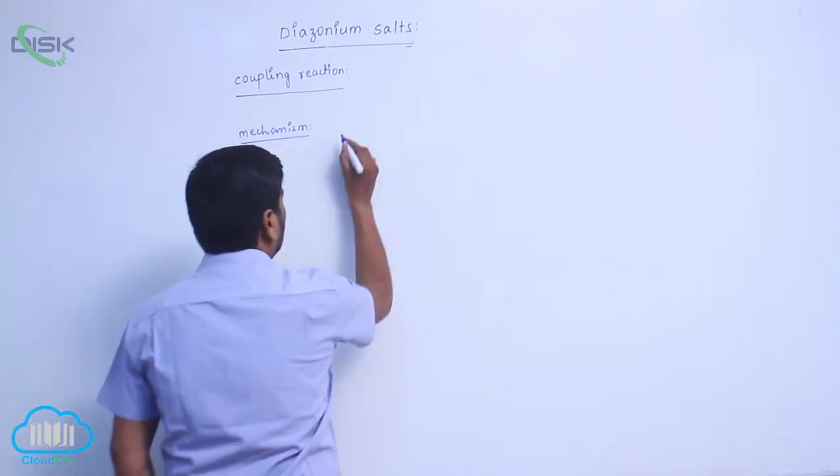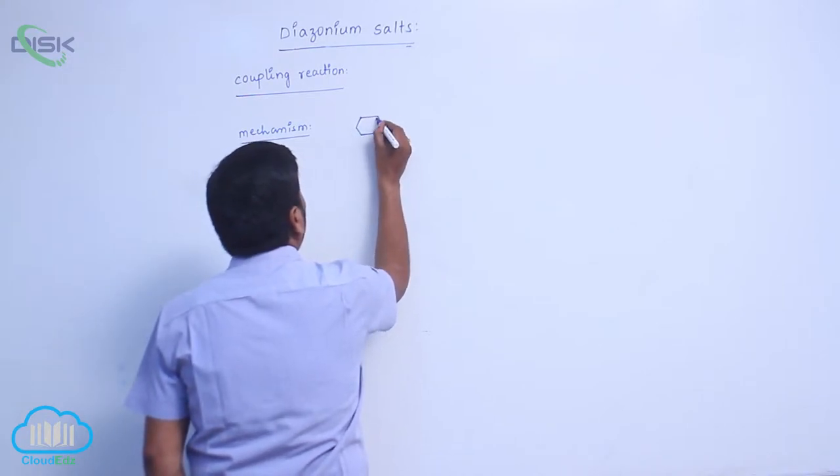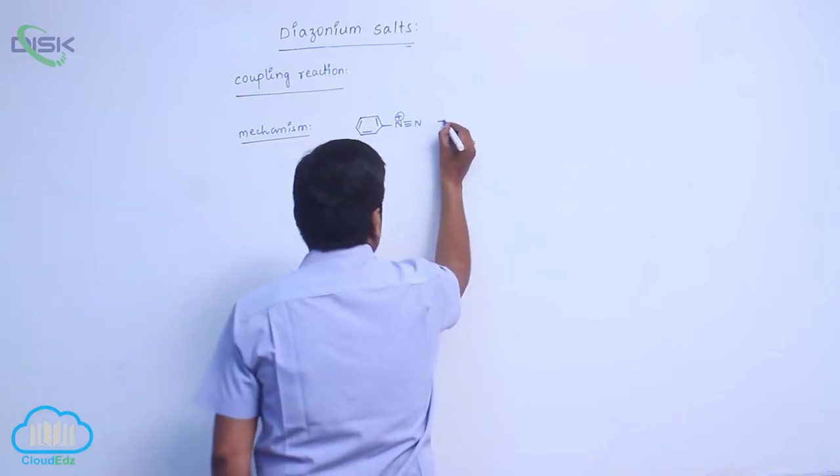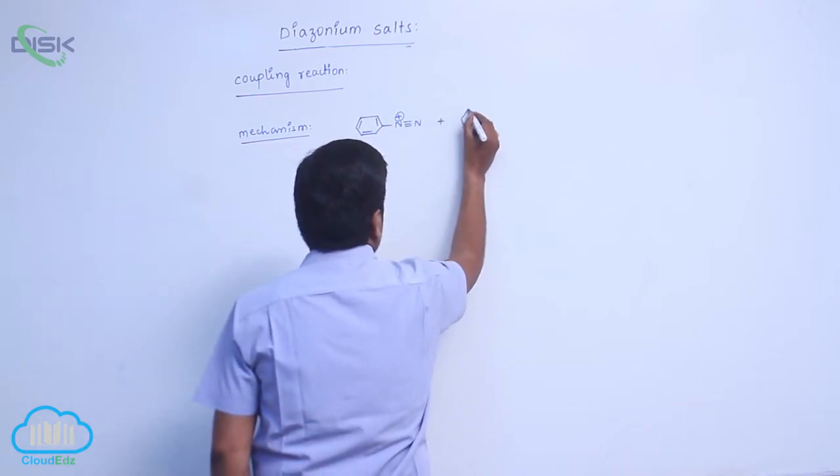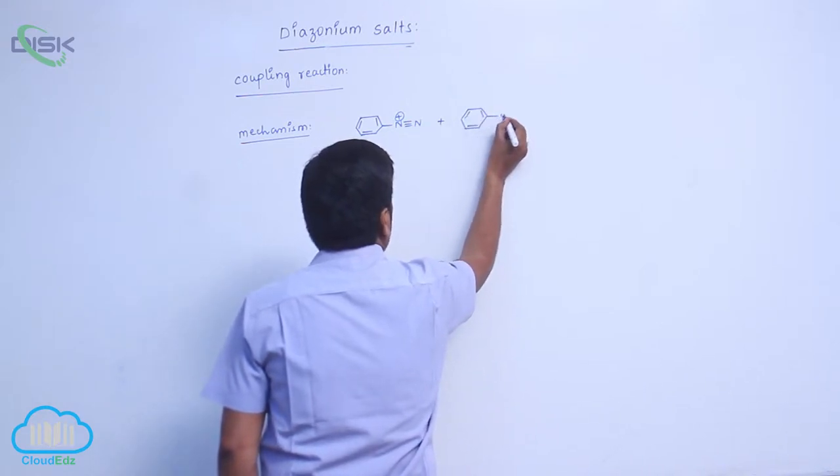Mechanism. Here is N double bond N, carries positive charge. Double bond. Here is which group? Y group.